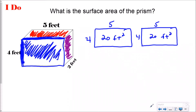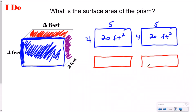Now I want to do the top and the bottom. When I draw the top rectangle, it's going to have the same length as the front but the width will be different. I'm drawing both the top and the bottom. Looking at the top rectangle, the length is still five, but the width is not four. I look at the opposite parallel side and it tells me it's two feet wide, which means this side is also two. Using my knowledge of rectangles, the bottom is also the same. The area is 10 feet squared.